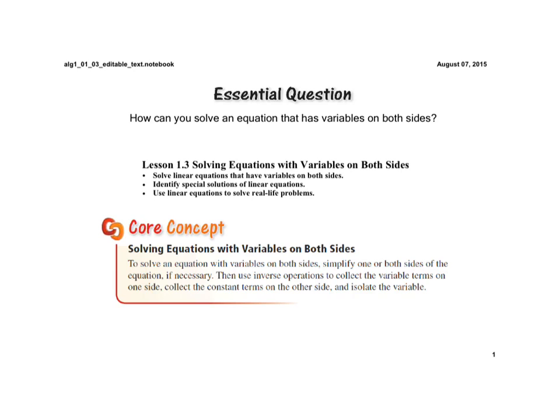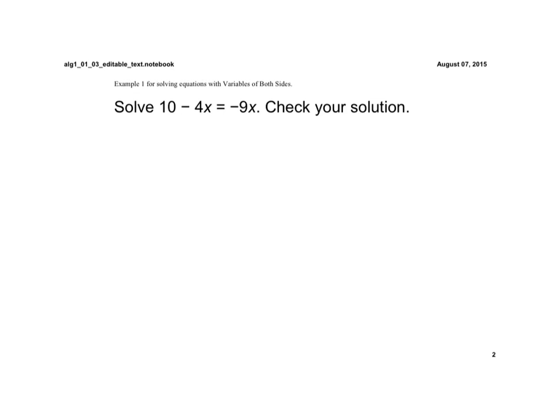We're going to do an example here on the next slide that will cover this core concept. If you notice, the difference between this problem and the problems we were doing is that we have a variable term on the left side and a variable term on the right side. To solve an equation, we have to have the variable terms to one side of the equal sign and the constant terms, or the terms with no variables, on the other side.